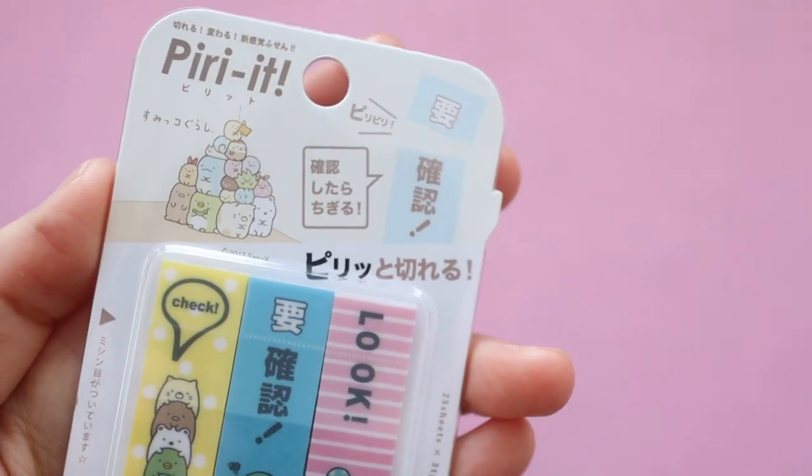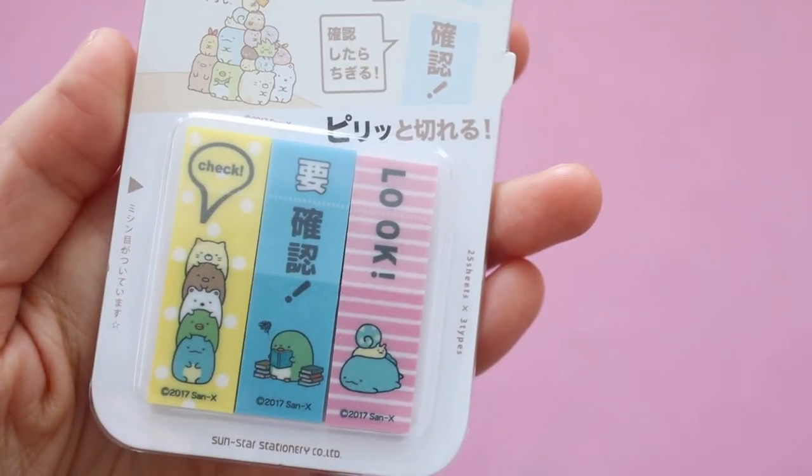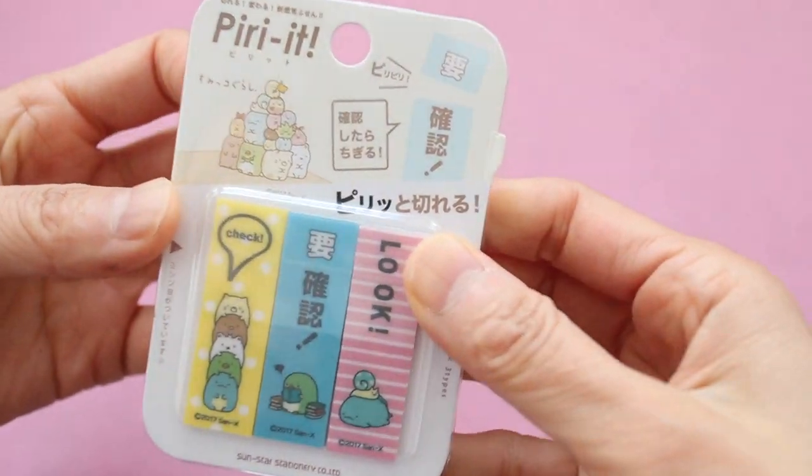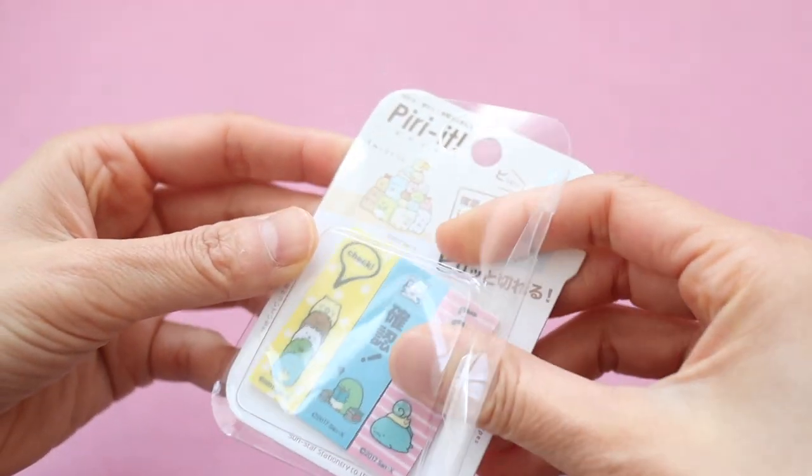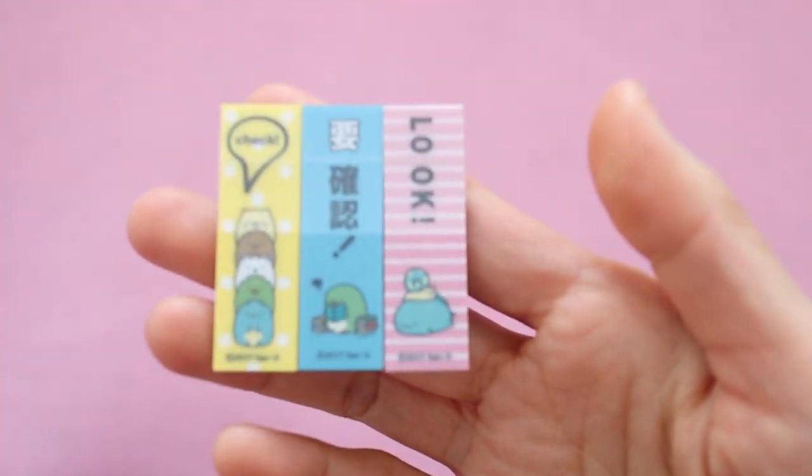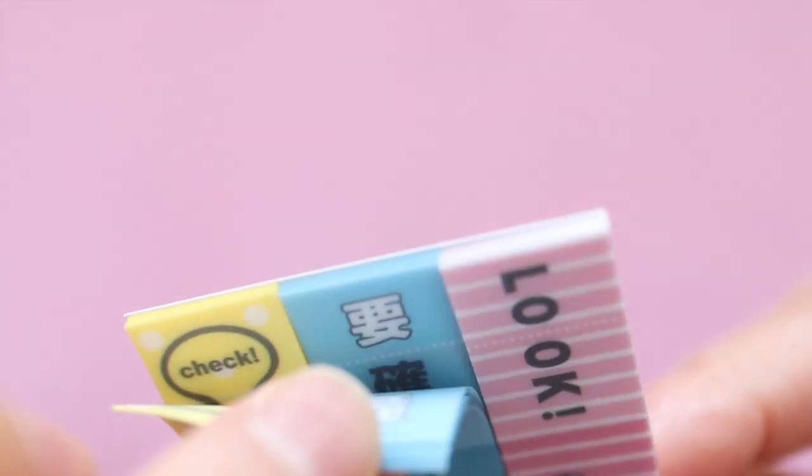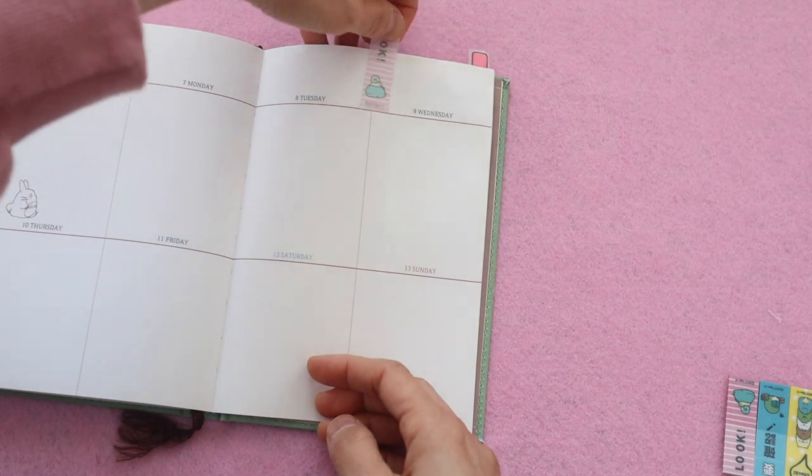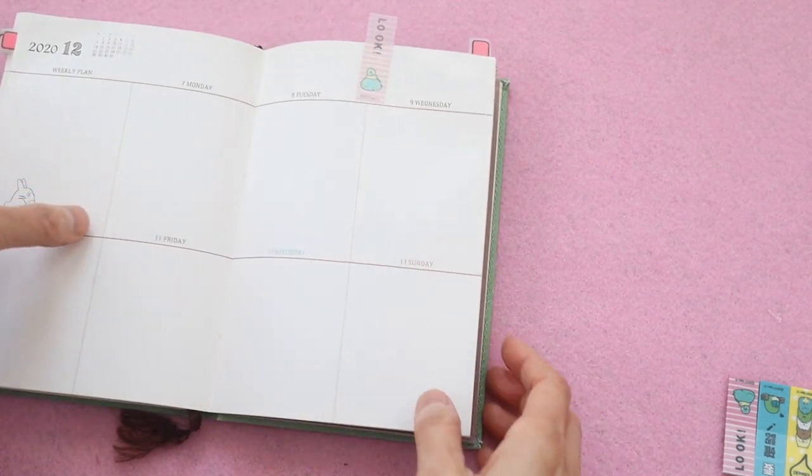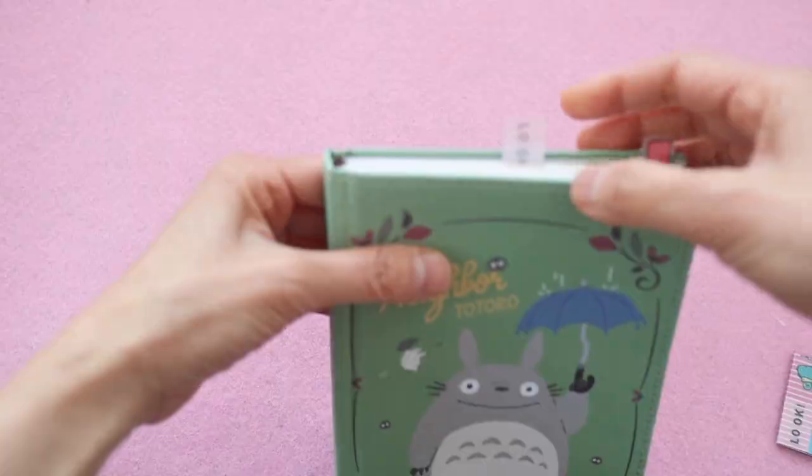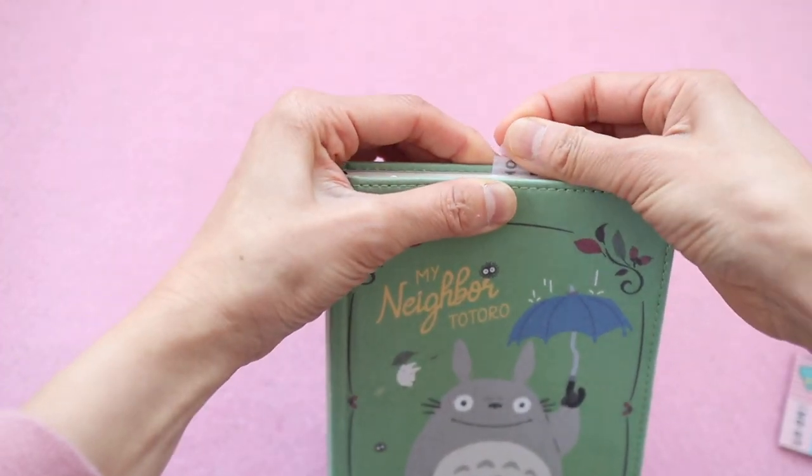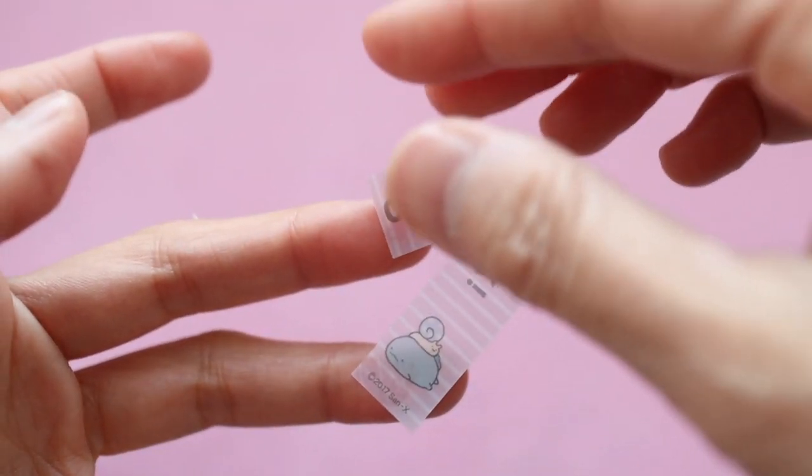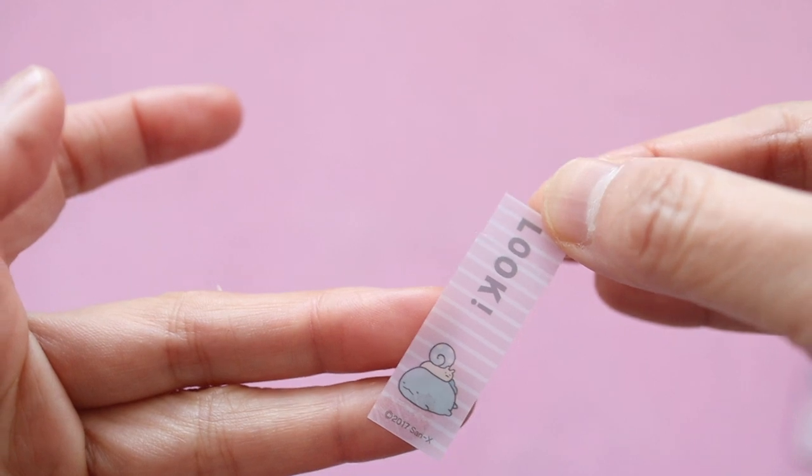This next item is called Piri It or maybe in Japanese you would say Piri It. These are cute little sticky tabs with Sumiko Gurashi characters on them. If you ever have something that needs to be done, instead of having a checklist, you can add one of these sticky tabs. You put it into your notebook. Then once the item has been completed or examined or checked, then you can just rip off the top of that tab because there's a little perforation that allows you to rip it off. And it's kind of satisfying to do.